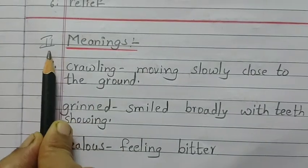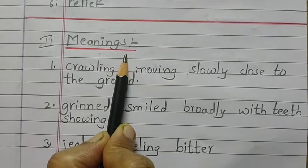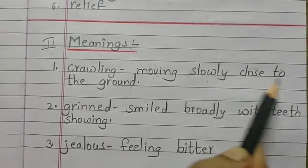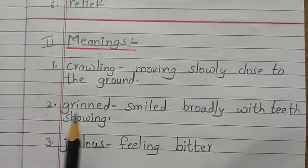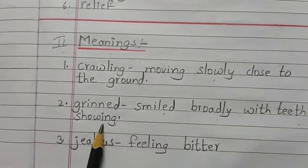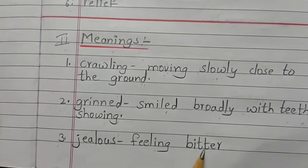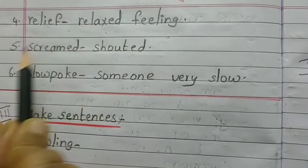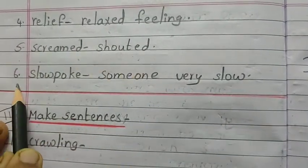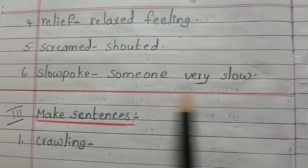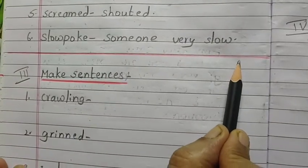Draw a line with red color pencil. Leave one line. Second bit: meanings. Underline it with red color pencil. First one — crawling: moving slowly close to the ground. Second one — grinned: smiled broadly with teeth showing. Third one — jealous: feeling bitter. Fourth one — relief: relaxed feeling. Fifth one — screamed: shouted. Sixth one — slow poke: someone very slow. These meanings are also in the reader — you can copy from the reader. Draw a line with red color pencil.